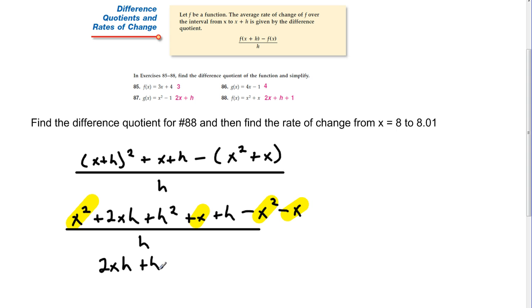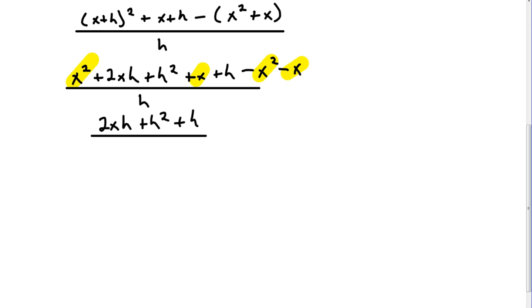And so when we simplify this, then we have 2XH plus H squared plus H, and then that quantity is divided once again by H. So then we simplify that, we have 2X plus H plus 1.